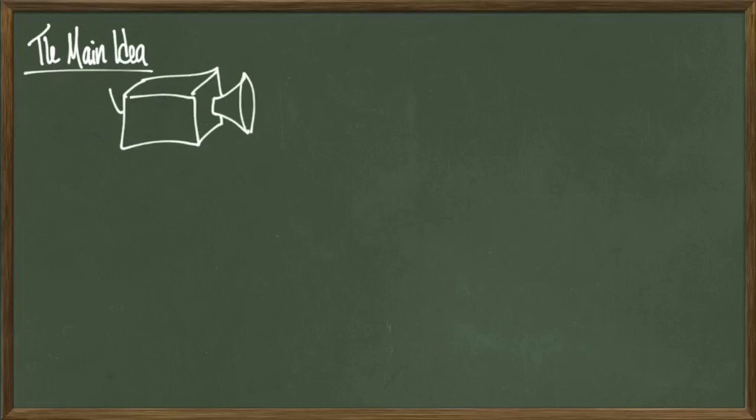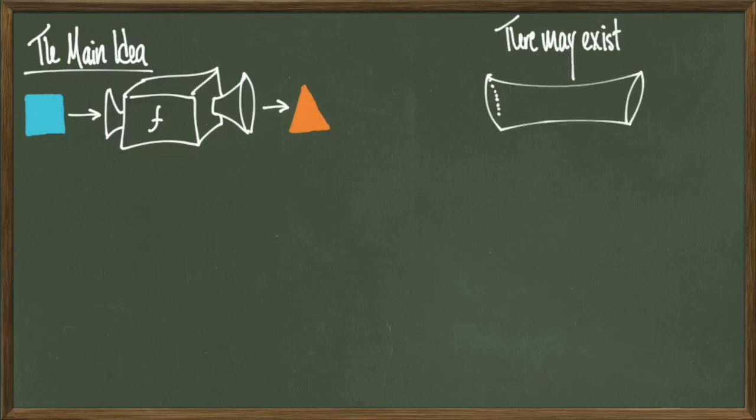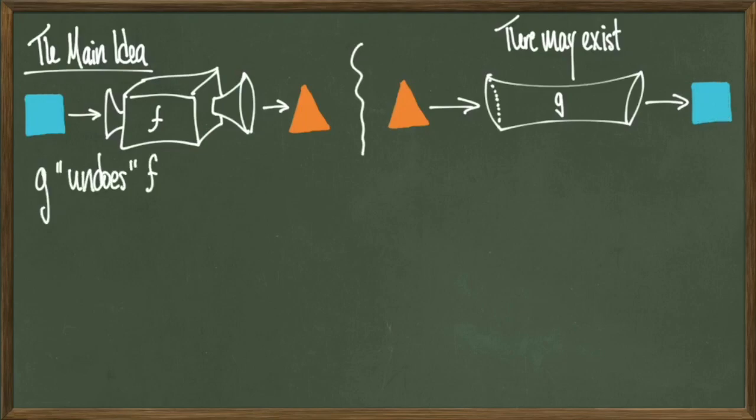To begin with the main concept, suppose that my function f takes as input the blue square and then outputs an orange triangle. Now sometimes there might exist a corresponding function g that inputs the orange triangle and then outputs the blue square. Basically in this case, g undoes f or g negates f. This gives rise to the phenomenon of inverse functions.